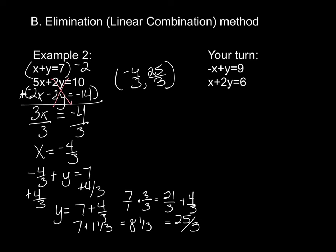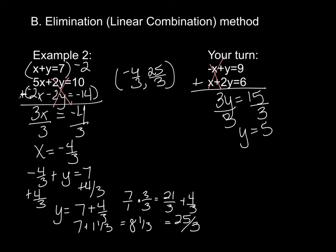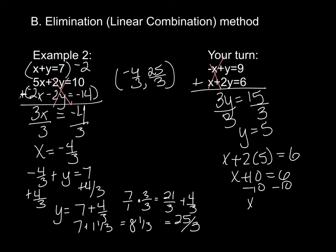Pause the video and do the second problem. If you look at it, the equations are already set up so the x's cancel when added together. Adding them: negative x plus x is 0, y plus 2y is 3y, and 9 plus 6 is 15. Dividing by 3, y equals 5. Plugging back into the second equation: x plus 10 equals 6, so subtracting 10 gives x equals negative 4. The ordered pair is (-4, 5).